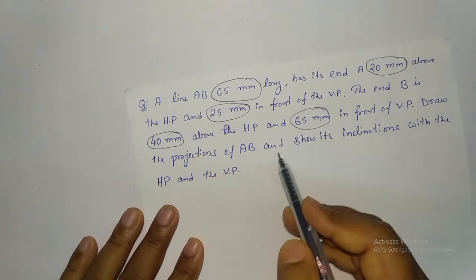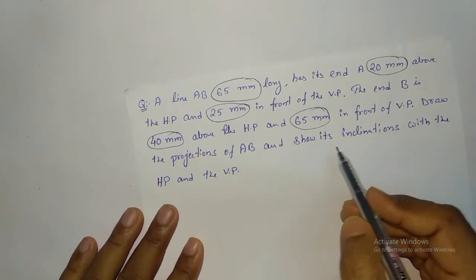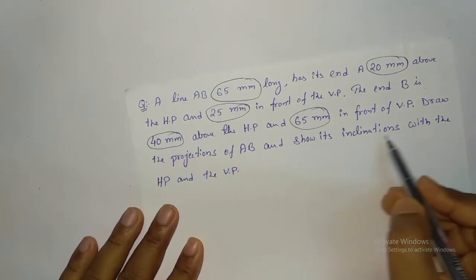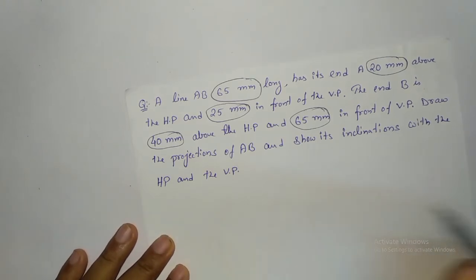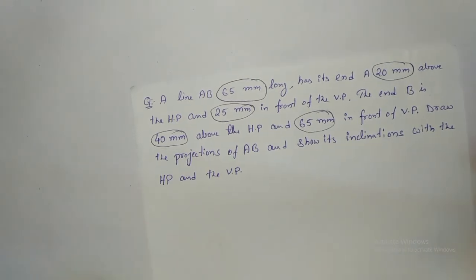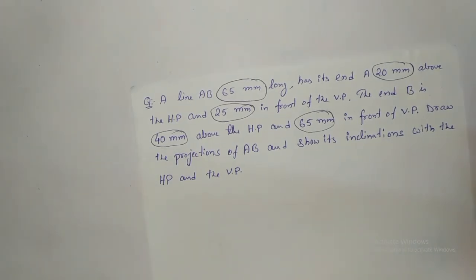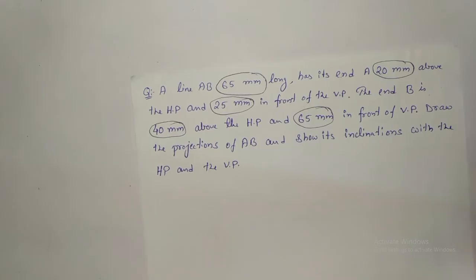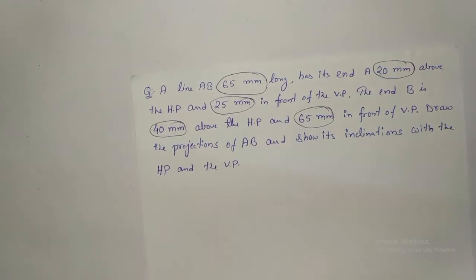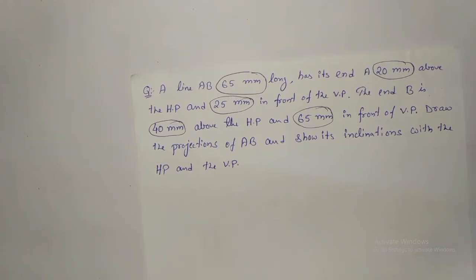Draw the projection of AB and show its inclination with HP and VP. In this problem, you have to draw the projection and you have to calculate the inclination with respect to the horizontal plane and vertical plane — that is, theta and phi you are going to calculate.